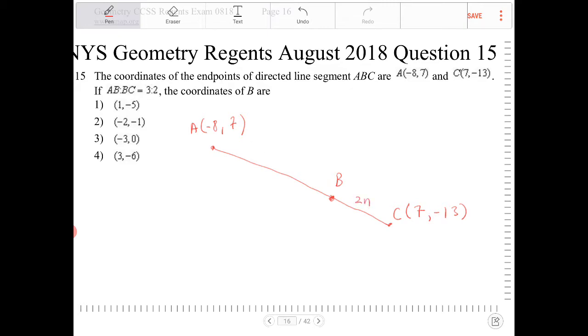that is 2n, then AB will be 3n. Or you can think of the entire segment as 5n.